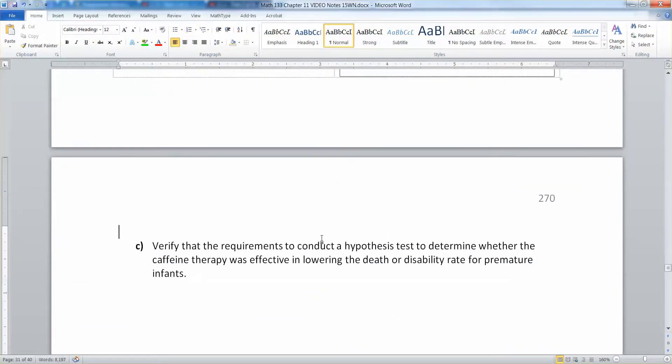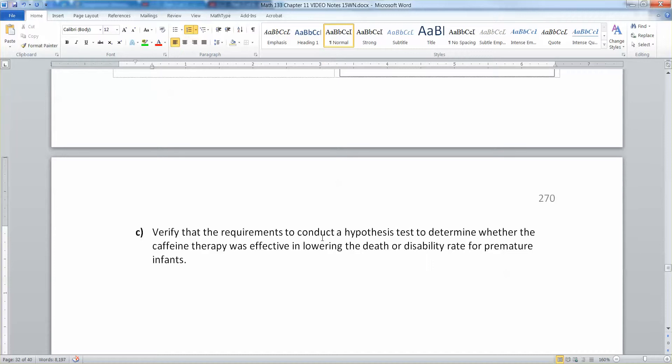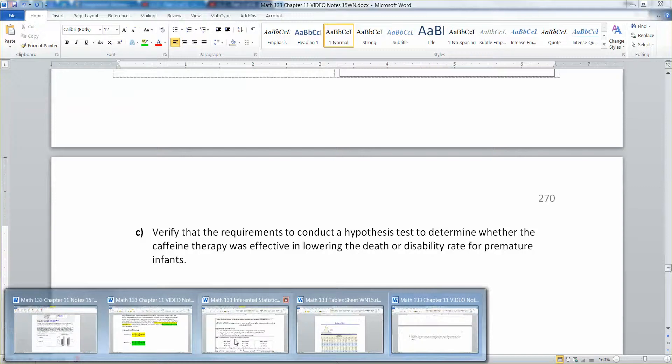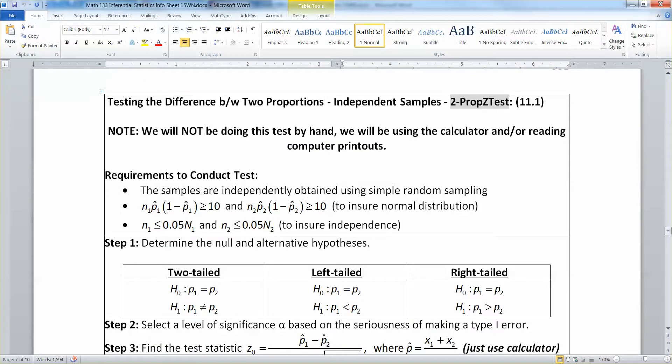Before we can get to proving it, we're going to need to verify that we've met our requirements for conducting a hypothesis test. We need to have the samples be independently obtained using simple random sampling. We need N times P times 1 minus P to be greater than 10 for each group. And then we need little n1 to be less than 0.05 capital N1 for each group.